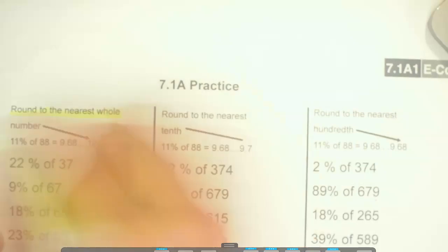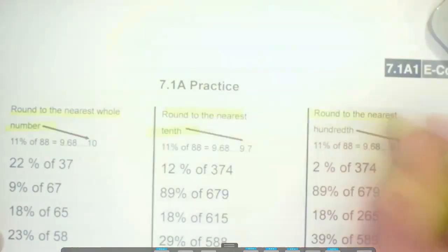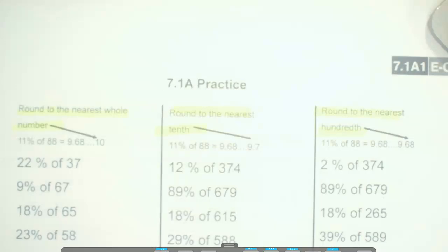So in this first column, we're going to round to the nearest whole number, second column to the nearest tenth, third column to the nearest hundredth. So we'll do a couple of these so you get the idea.